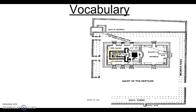In the centermost part of the temple is the Holy of Holies — the most holy place, the sanctum sanctorum. Outside of that is the Holy Place. Outside of that is the Court of Priests. Outside of that is the Court of Israel. Outside of that is the Court of the Women. And then the outermost part of the temple is the Court of Gentiles.